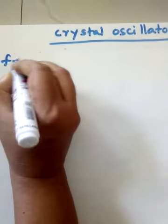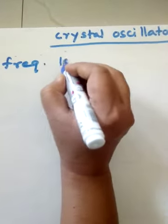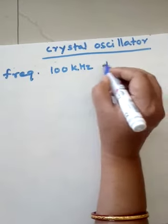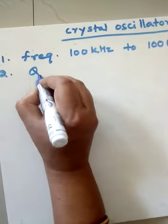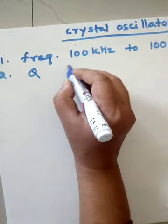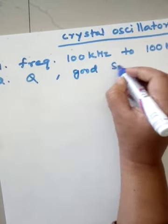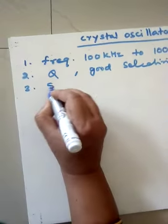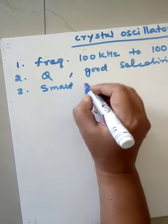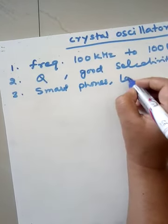Crystal oscillator is a stable oscillator which provides frequency in the range of 100 kilohertz to 100 megahertz. It also provides high quality factor and good selectivity. It is used in our smartphones, laptops, and desktops for providing clock frequency.